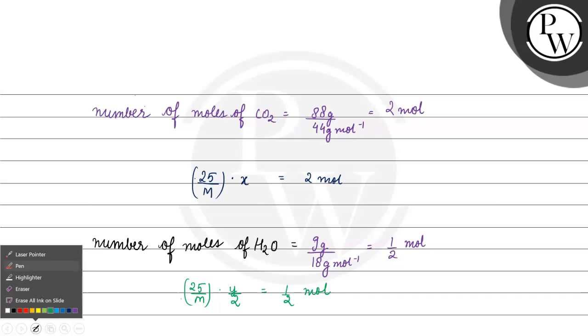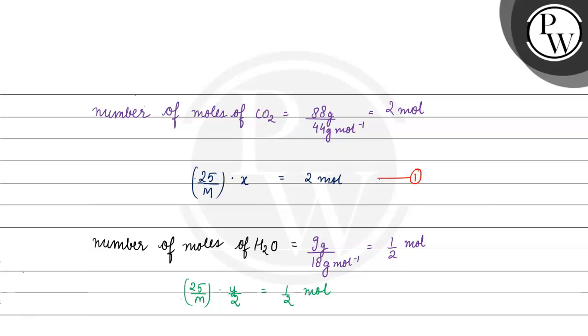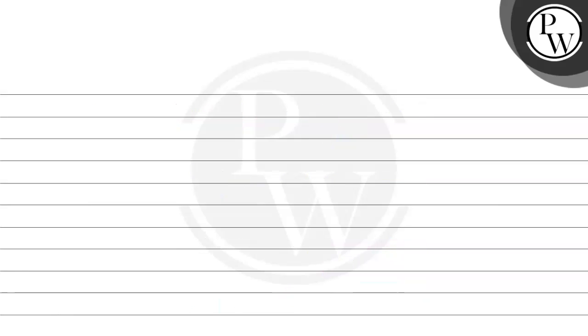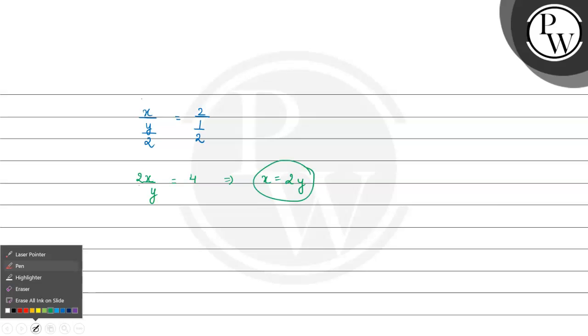Now we divide both equations. Dividing 1 by 2, we get x divided by y by 2 equals 2 divided by 1 by 2. What happens next? x by y is basically equal to 4. Here, x equals 2y.